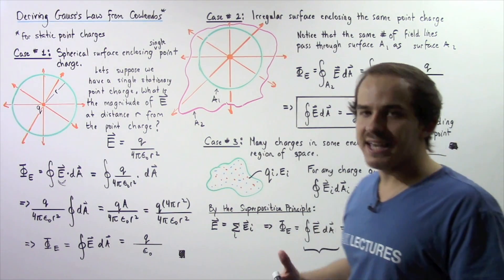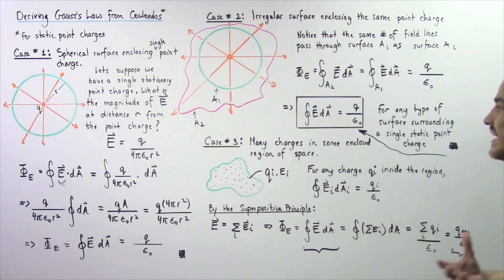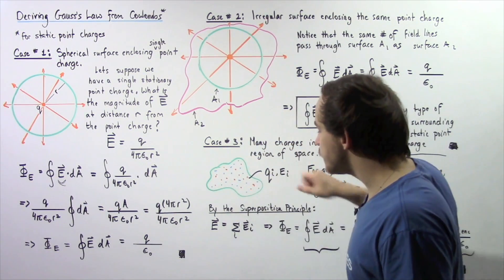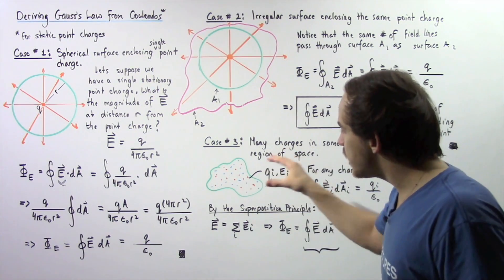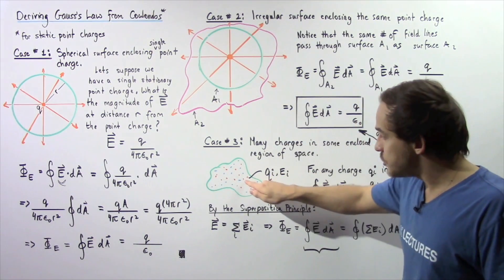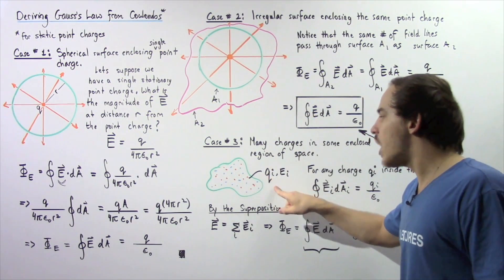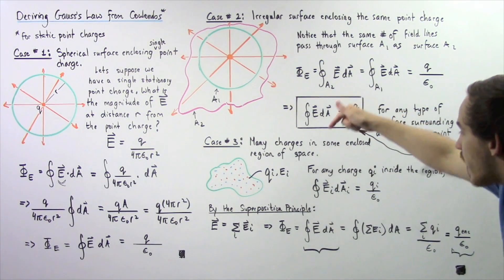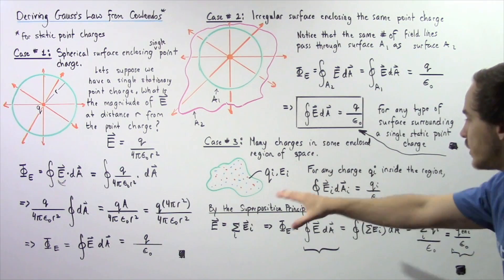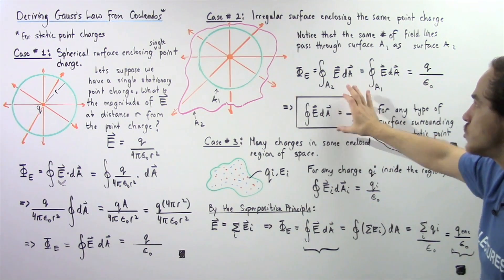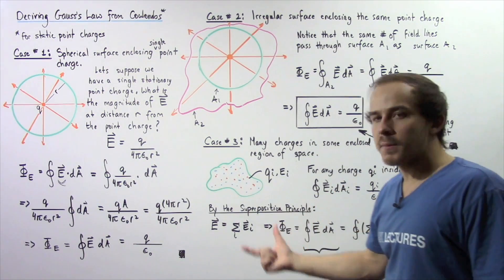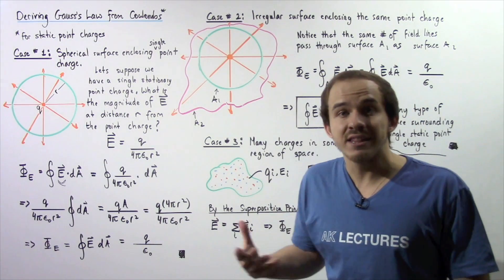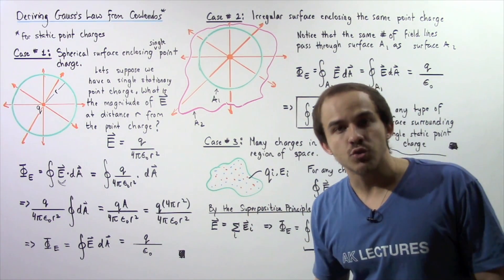Finally, let's consider case number three, the most complicated case. Suppose we have many charges within some irregular enclosed region of space. Choose one particular charge QI, which produces its own electric field EI. From case two, for any single point charge inside the region, the flux equals QI/ε₀. By the superposition principle for electric fields, the total electric field is equal to the sum of the individual electric fields.